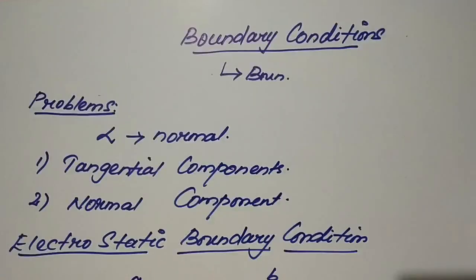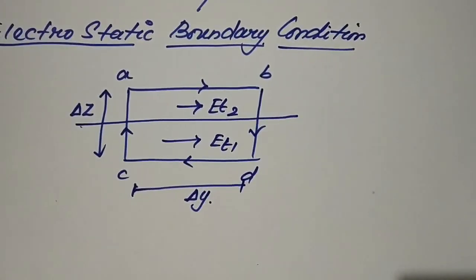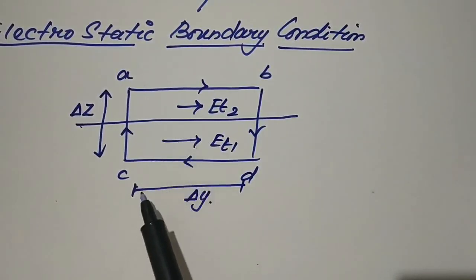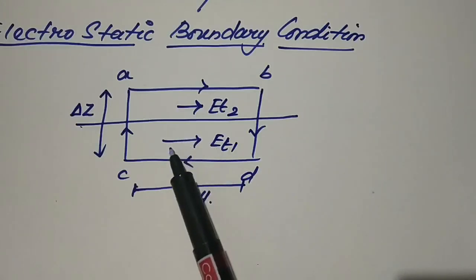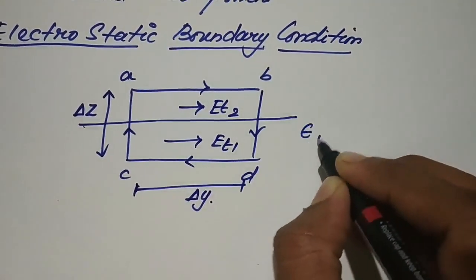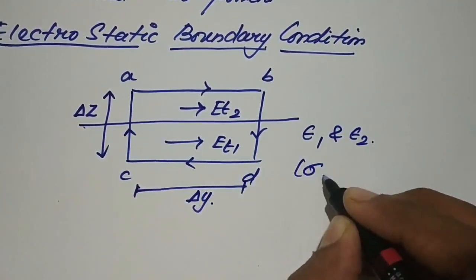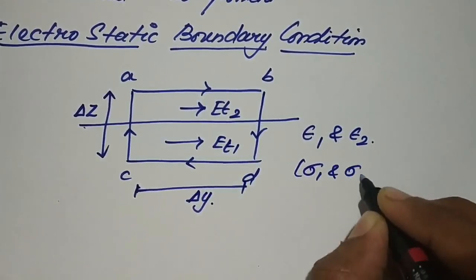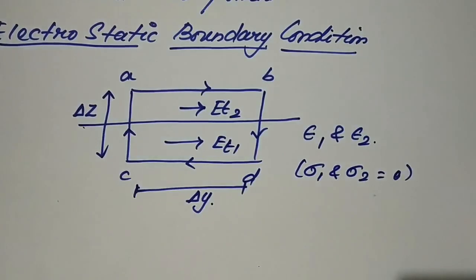Now we'll see what is the electrostatic boundary condition. For this, let us consider two infinite dielectric media separated by a boundary. These two media have dielectric constants epsilon 1 and epsilon 2, with sigma 1 and sigma 2 equal to 0 — that is, their conductivities are equal to 0.